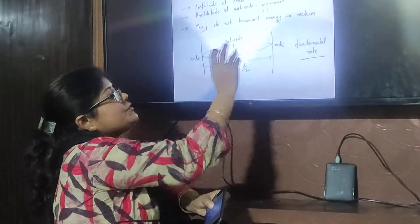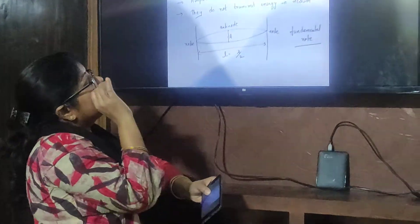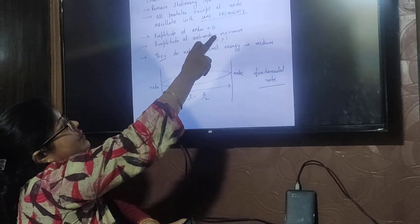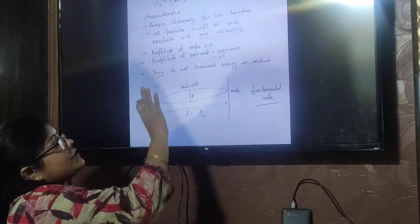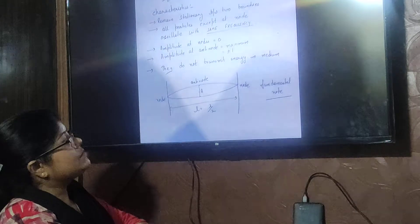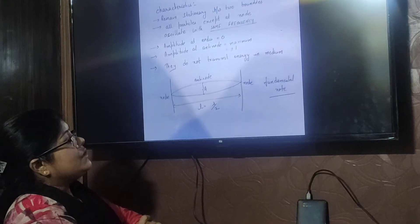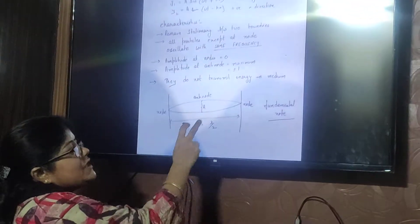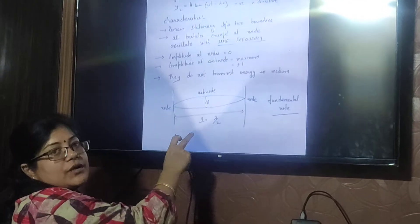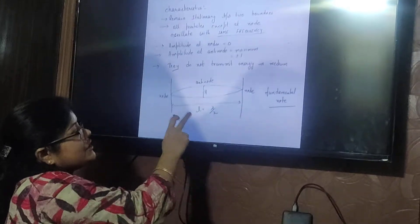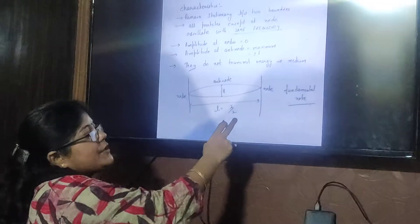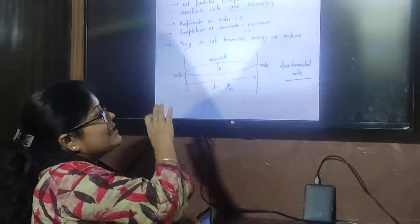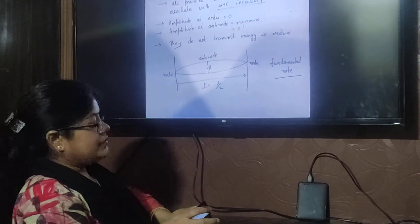The amplitude at a node is equal to zero, and the amplitude at an anti-node is equal to maximum (plus or minus 2a). Now, any string has a length. Remember: length is equal to lambda divided by 2, where lambda is the wavelength of the waves travelling in the medium.